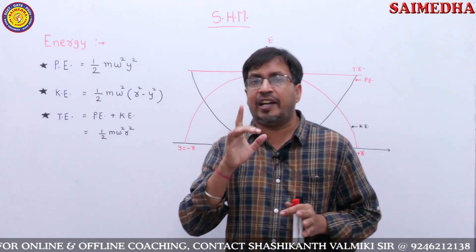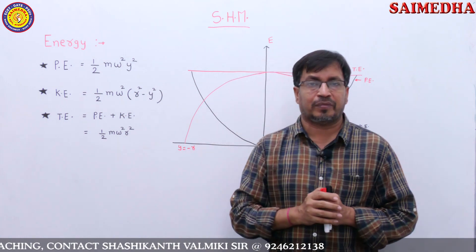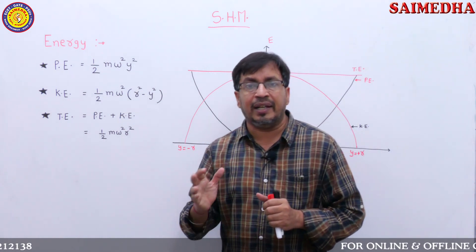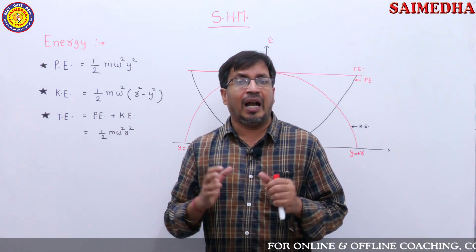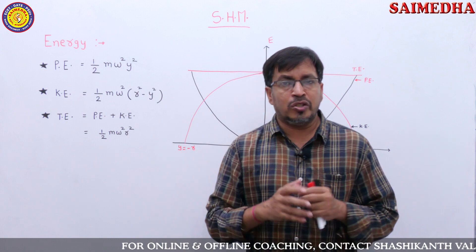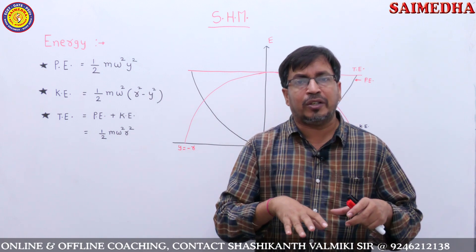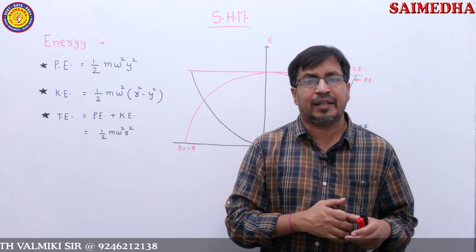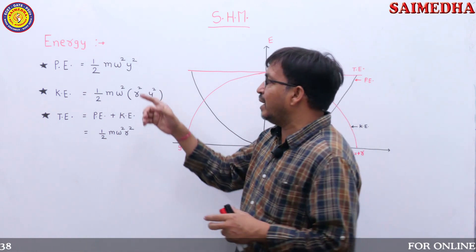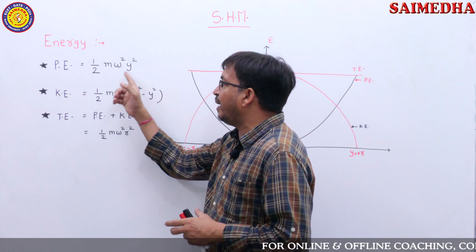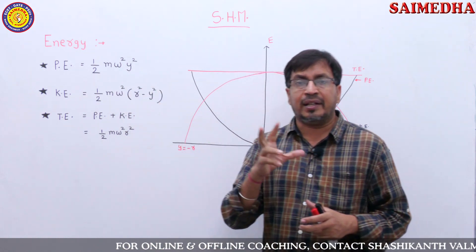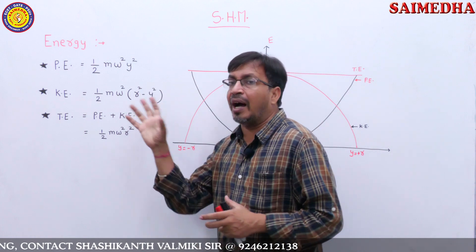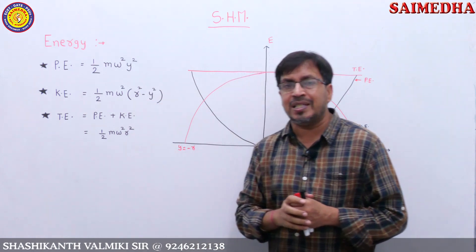One hundred percent we are expecting one question from this topic. The three formulas are: potential energy, kinetic energy, and total energy. Total energy is easy to remember because it is a combination of potential and kinetic energy. So potential energy is half m omega squared y squared, and kinetic energy is half m omega squared into (r squared minus y squared).